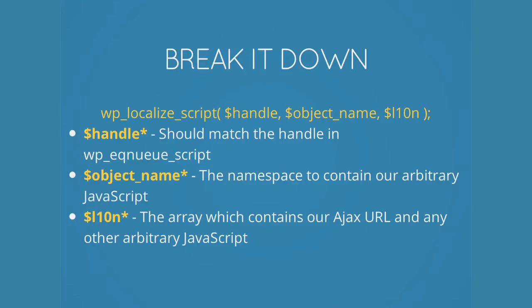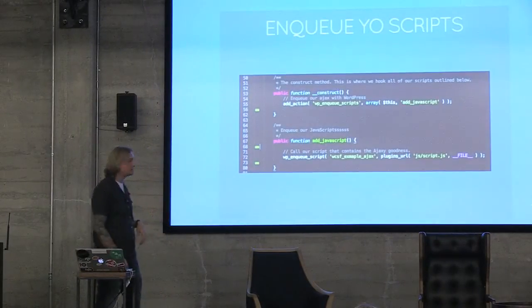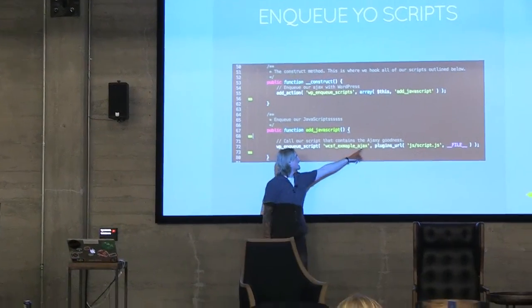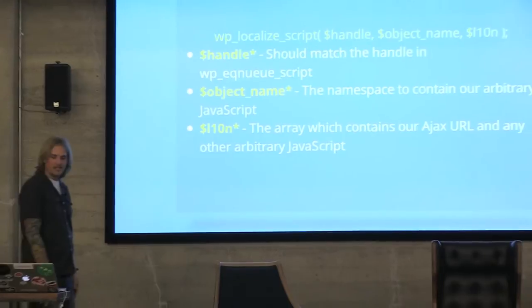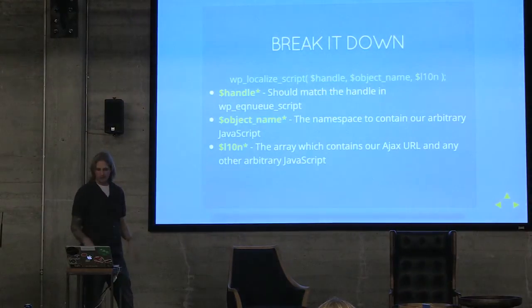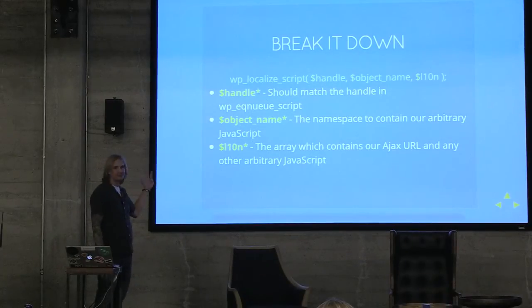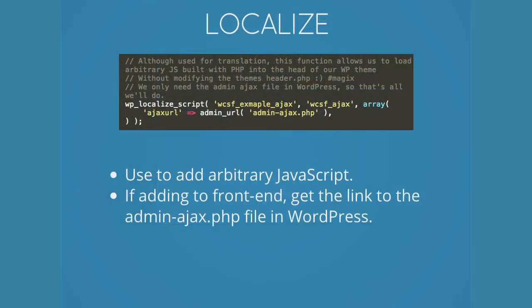Let's break that script down a little bit. To start off it has a handle — just like wp_enqueue_script — but this handle you want to match what you put into your wp_enqueue_script, so that it makes a connection between those two scripts. The next attribute is object name, which is essentially a namespace to contain your arbitrary JavaScript. And then last is l10n, which basically means internationalization — you essentially feed it an array that puts a path to your WordPress Ajax script.